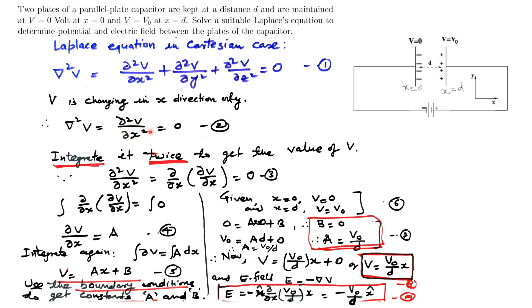This is a second-order partial differential equation. If we integrate it twice, we can get the potential V, finding the constants of integration using the boundary conditions. Integrating delta²V/delta x² equal to zero once gives delta V/delta x equal to a constant A. Integrating again gives V equal to Ax plus B, where A and B are constants to be determined from the boundary conditions.